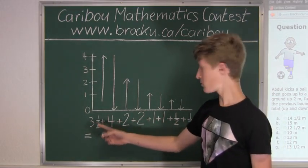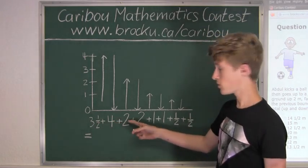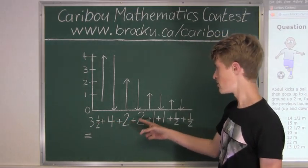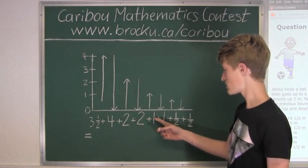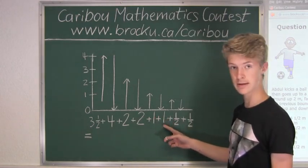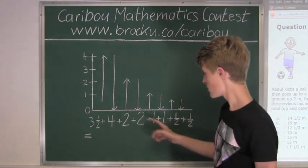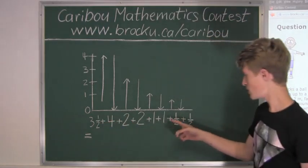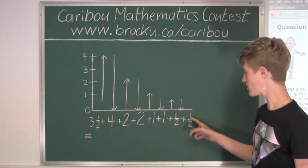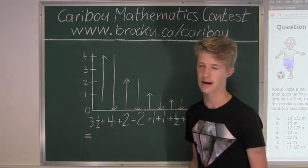So therefore, we will start with 3 plus 4 is 7, plus 2 is 9, plus 2 is 11, plus 1 is 12, plus 1 is 13. Now the halves, 13 plus 1 half is 13 and a half, plus 1 half is 14, plus 1 half is 14 and a half.